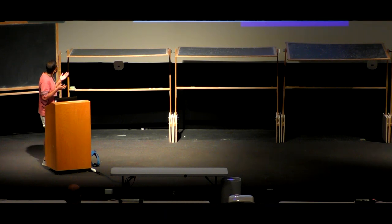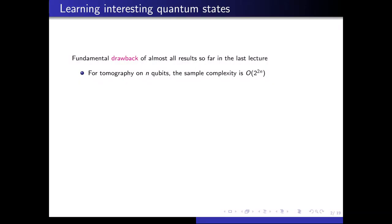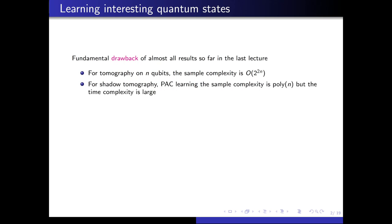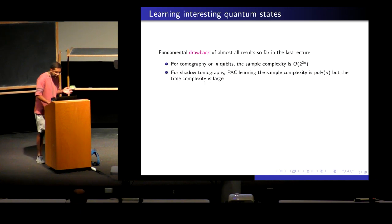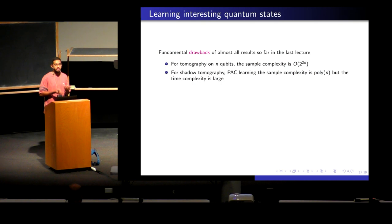One fundamental drawback of tomography was that the sample complexity was optimally 2 to the 2n — exponential in the number of qubits. We then looked at other models like shadow tomography and PAC learning, where the sample complexity was exponentially better, but the time complexity was exponentially bad.